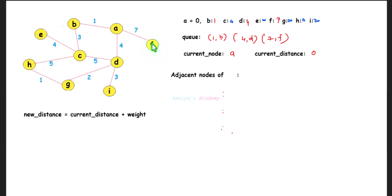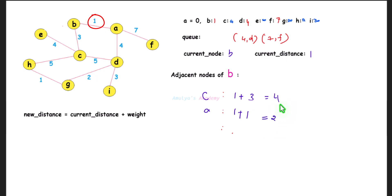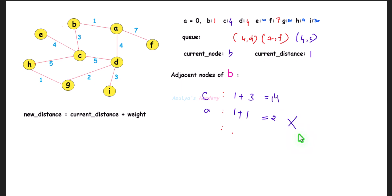Remove the node with the smallest distance from the queue — that is B with distance 1. Current node is B and current distance is 1. Adjacent nodes of B are C and A. New distance to C: 1 + 3 = 4; new distance to A: 1 + 1 = 2. For C, 4 is less than infinity so update to 4 and add (4, C) to the queue. For A, 2 is not less than 0, so skip it.